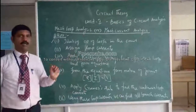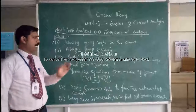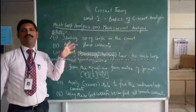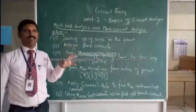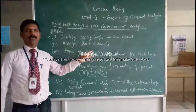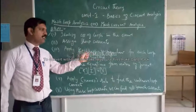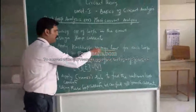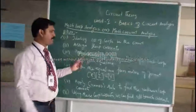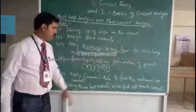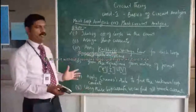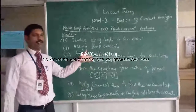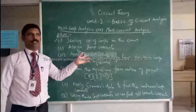The third step is to apply Kirchhoff's voltage law for each loop. For example, if you have a circuit with three loops, you get three equations formed using Kirchhoff's voltage law. Once you get the equations, they can be solved — you can solve using simultaneous equations or you can go with the matrix method.